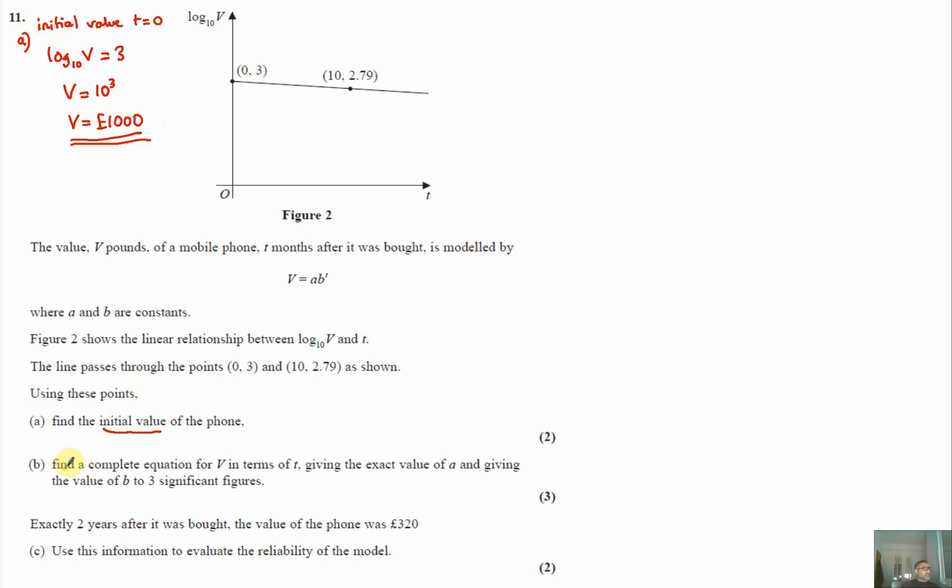Now for part b, it says find a complete equation for V in terms of t. So we want to rewrite this giving the exact value of a and giving the value of b to three significant figures. In order to do that, first of all let's look at this linear function and work out the equation of this straight line. In order to do that first of all we need the gradient.